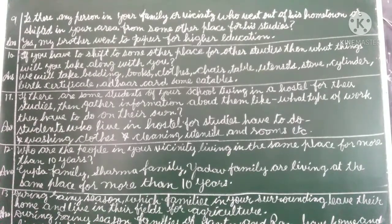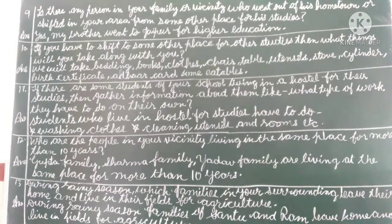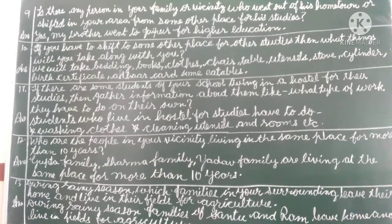Question 12: who are the people in your vicinity living in the same place for more than 10 years? Question 13: during rainy season, which families in your surroundings leave their home and live in their field for agriculture? During rainy season, families of Santu and Ram leave home and live in fields for agriculture.